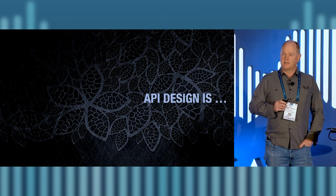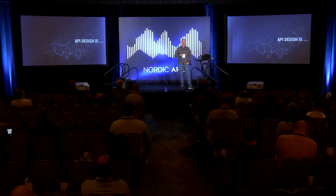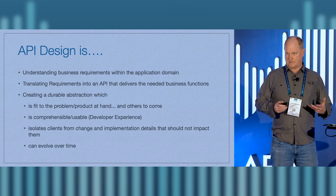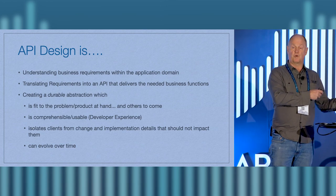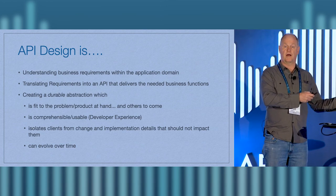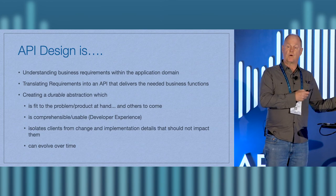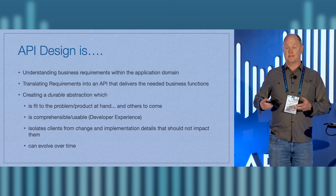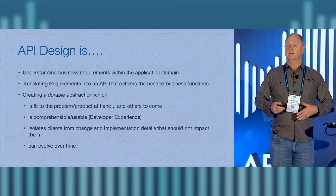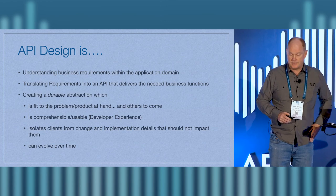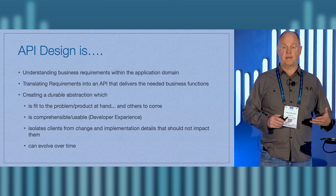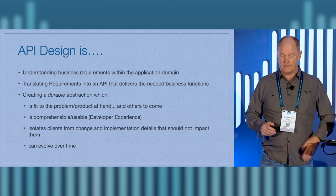I want to start by just talking a little bit about what I think API design is. Everybody has their own definition, but to me, API design is a translation process. It's taking requirements from your product team — you're building a new product, you're adding a new feature — you have to take those requirements, understand them, and then map them into an API that delivers those capabilities so people can build applications on top of those APIs. That translation exercise is really the most critical part of API design: understanding the domain and then mapping it into an API.